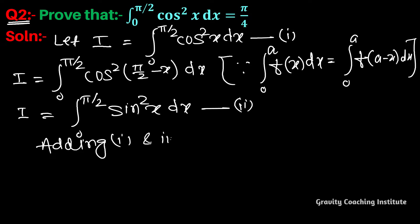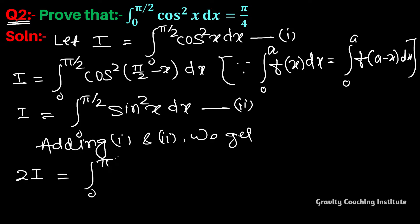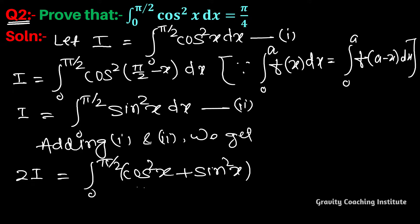Now adding equation first and second, we get 2I equals the integral from 0 to π/2 of cos²x plus sin²x dx.